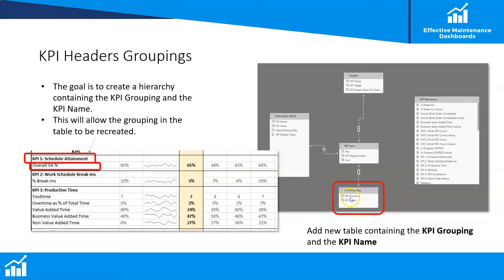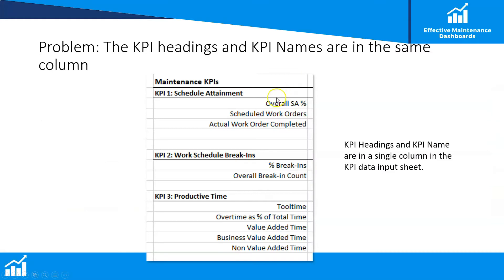To do this we're going to create a new table with two fields: the KPI grouping and the KPI name. The problem is that in our source data the KPI grouping and the KPI name are in the same column. We need to get them into two separate columns inside our data model. For example, for schedule attainment we'd have one column for KPI name and another for KPI grouping, with the grouping value being the same for each of those names.